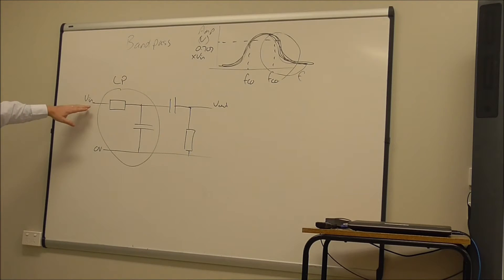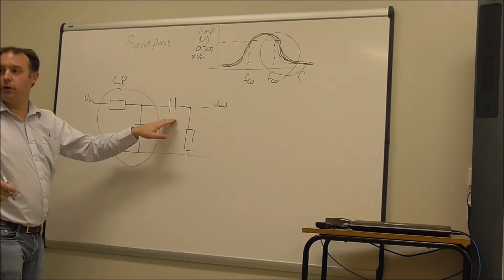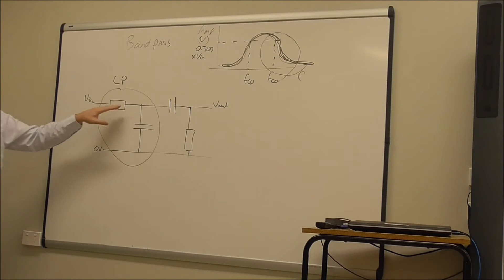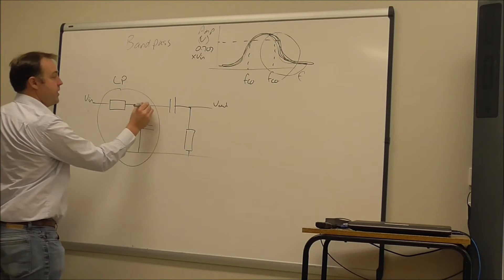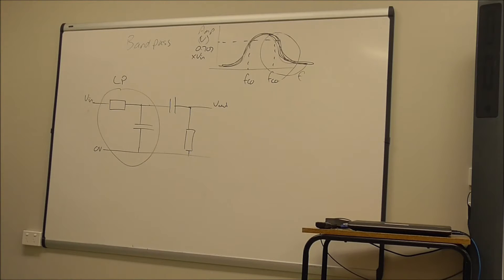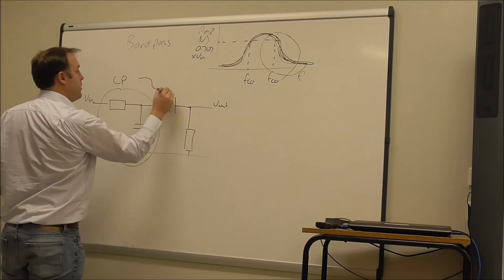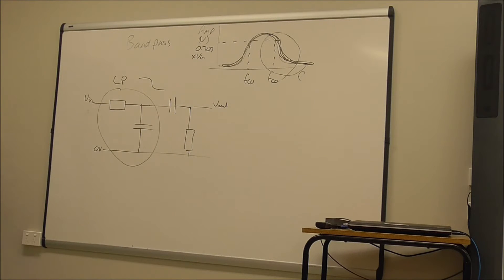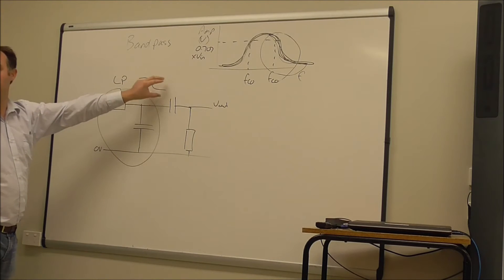And so if you have a look at here, any of the low frequencies get passed through, but the high frequencies get effectively taken to 0 volts. And so the output of this, if we were to just look at it independently, would look like that. So all of the low frequencies here are allowed through, and the high frequencies are blocked.